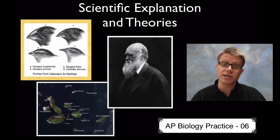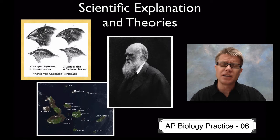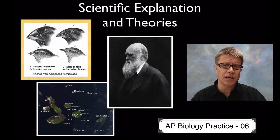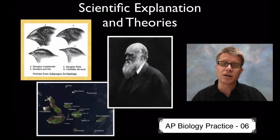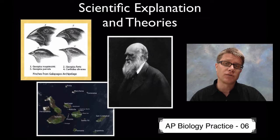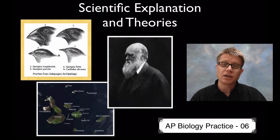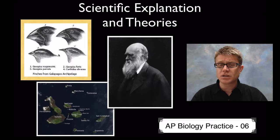In science we come up with a good question, we gather good data, we analyze the data, and then over time we start to develop theories which explain how the world works. Natural selection was developed by Charles Darwin and it's been tested over time. It's a mechanism that explains how evolution can occur — the finches on the Galapagos had variation in their beaks and they each adapted to their specific food supply over time.